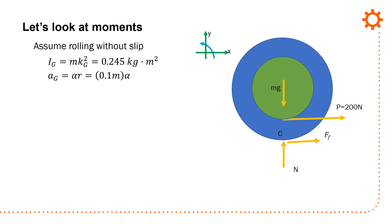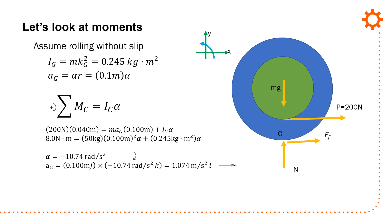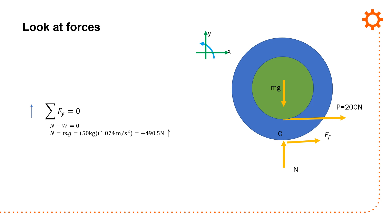Ag is alpha r and 0.1 meter alpha. If I do sum of moments about point c, it makes it a little bit easier. I've got everything except p, which is eliminated, so p becomes 200 times 0.04 meters, mag is 0.1 meter, and ig alpha. Substituting all the terms, I get alpha of 10.74 rads per second squared clockwise, and I get ag, which is 1.07 meters per second squared i to the right. If I look at the forces, I can say normal minus weight, normal equals mg, and I get 490.5 newtons acting upwards.